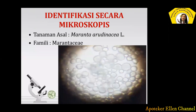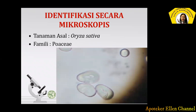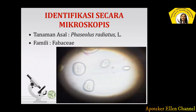Ini identifikasi secara mikroskopik. Tanaman asalnya Maranta arundinaceae, familinya Marantaceae — ini bentuk amilumnya. Tanamannya adalah tanaman garut atau irut, seperti ini bentuk amilum dari Maranta arundinaceae. Kemudian, identifikasi secara mikroskopik tanaman Oryza sativa atau padi, familinya Poaceae — seperti ini, ini hilusnya. Lalu ada tanaman Vaseolus radiatus, familinya Fabaceae atau kacang hijau. Amilumnya agak berjauhan satu dengan yang lainnya, butir amilumnya.